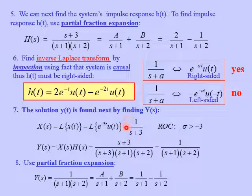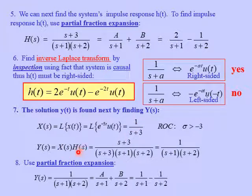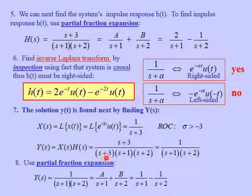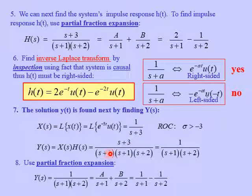We take this Laplace transform X(s) and multiply it by the transfer function H(s). We end up with (s + 3) over (s + 3)(s + 1)(s + 2). Notice that the (s + 3) in the numerator cancels the (s + 3) in the denominator, resulting in Y(s) = 1 over (s + 1)(s + 2).